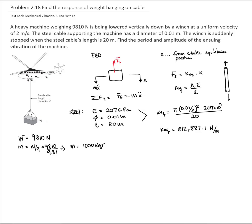Now, our equation of motion. Our equation of motion is m times x double dot plus k equivalent times x equals 0. Therefore, the natural frequency omega n equals to the square root of k equivalent over the mass. That will be the square root of 812,887.1 divided by 1,000. We have a natural frequency of 28.51 radians per second.